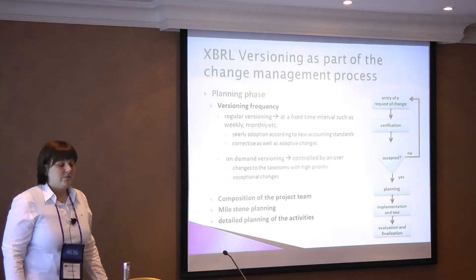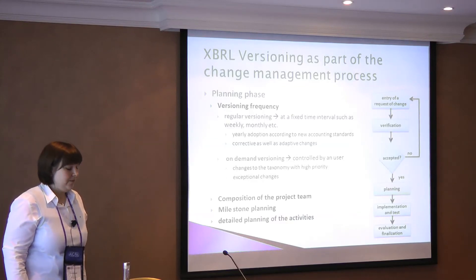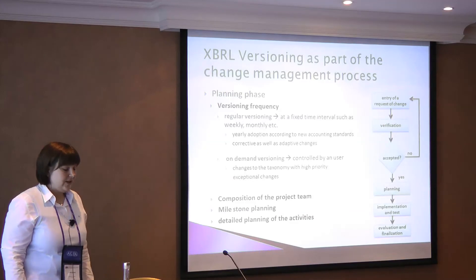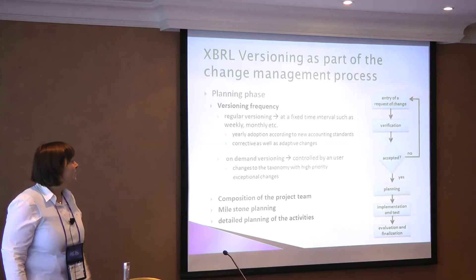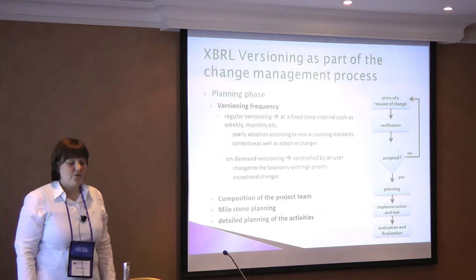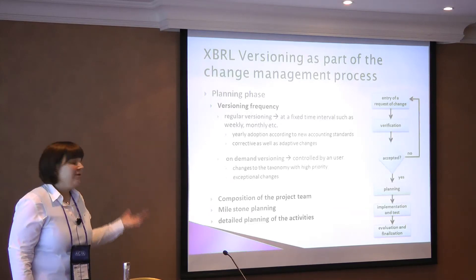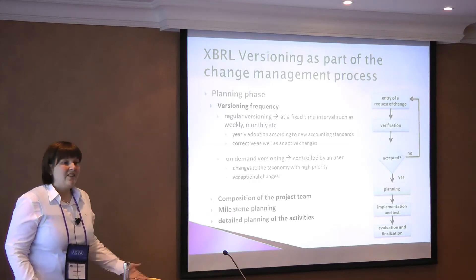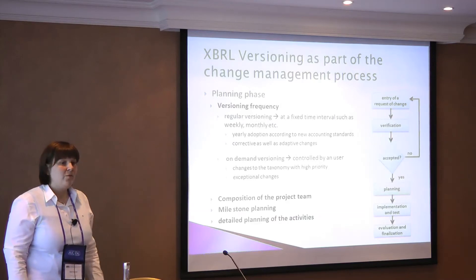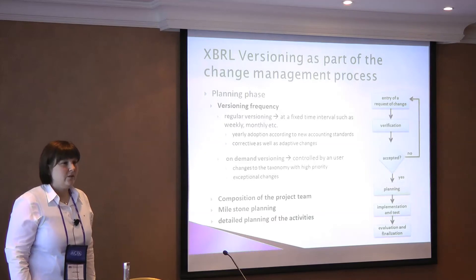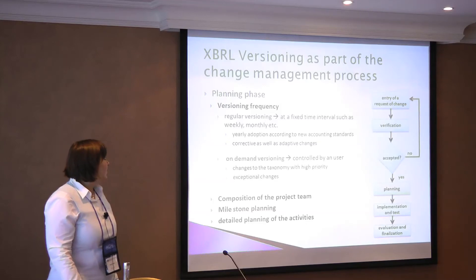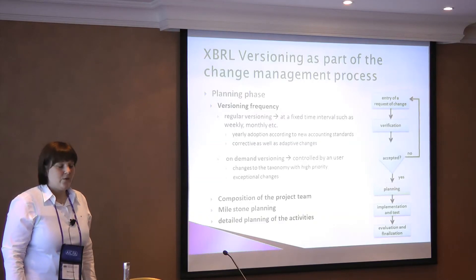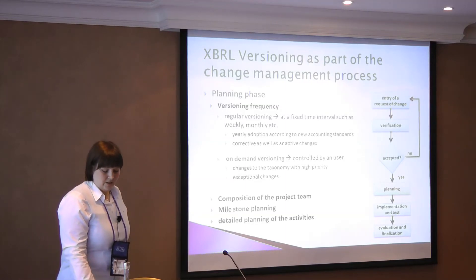We have to deal with the frequency of versioning. We regularly have a versioning every year or every two years to a fixed time, with yearly adoption to accounting standards and regulations, including both corrective and adaptive changes. And we have on-demand versioning — for example, when we find a bug in an early stage of a taxonomy, we have to adapt and publish as soon as possible. These are exceptional changes requiring a very short but well-defined change management process. We also need to consider composition of the project team, ensuring sufficient resources, milestone planning, and detailed planning of related activities.